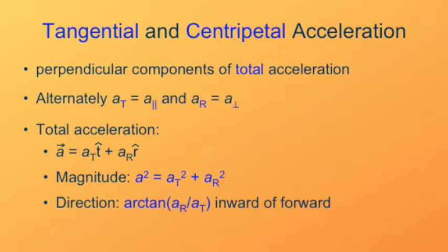The direction of the total acceleration, that's the net acceleration of the object, is at some angle that is the arctangent of the radial acceleration divided by the tangential acceleration, inward of forward. So whatever direction it's moving, that would be forward, and since it's moving in a circular path, there is a centripetal component inward.